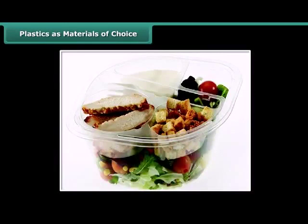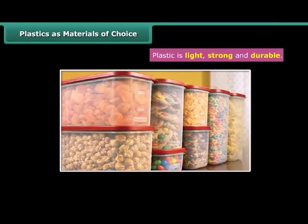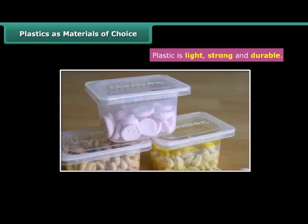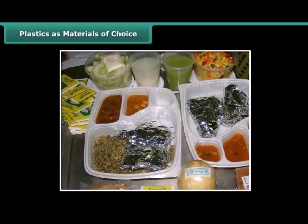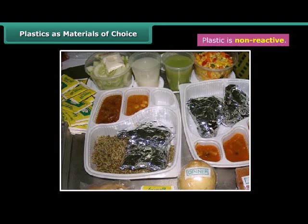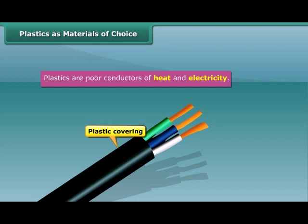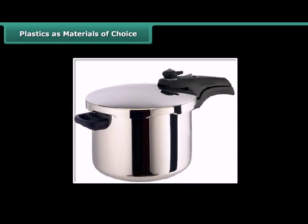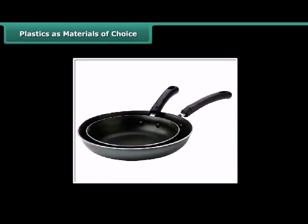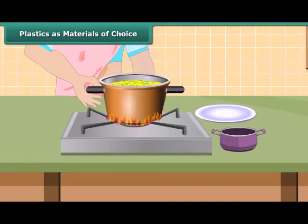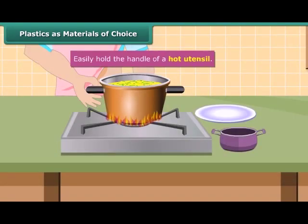Why are plastics so widely in use? The plastic containers are mostly used for the storage of food grains, pickles, salt and spices since these are relatively non-reactive and impermeable to moisture. Since plastic is a poor conductor of electricity, the electrical wires have plastic covering. The utensils used for cooking have plastic handles; plastics being poor conductors of heat, we can therefore easily hold the handle of a hot utensil.